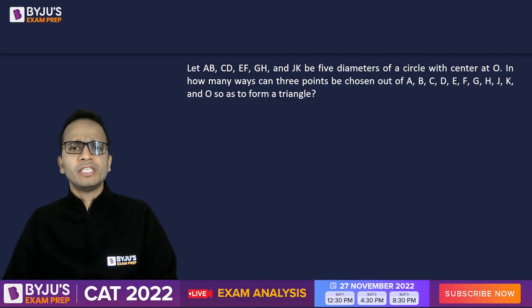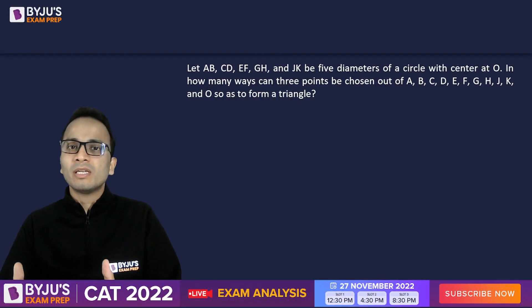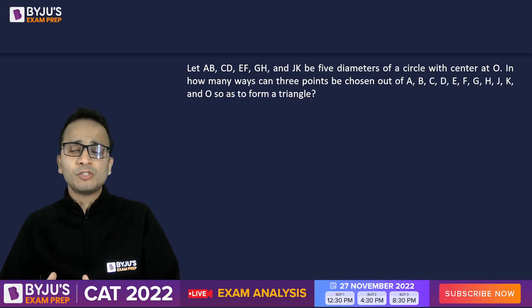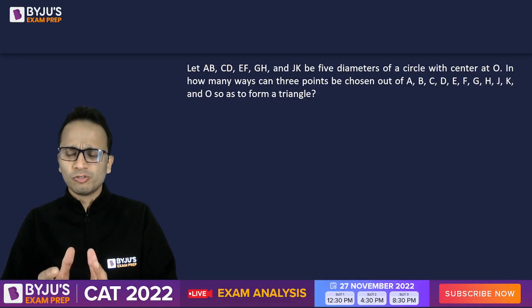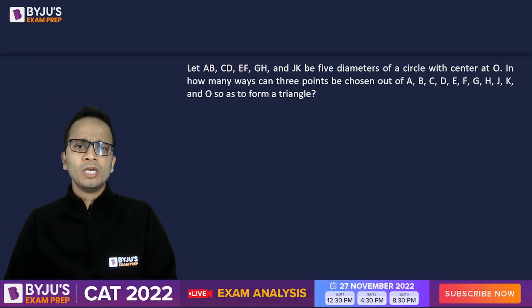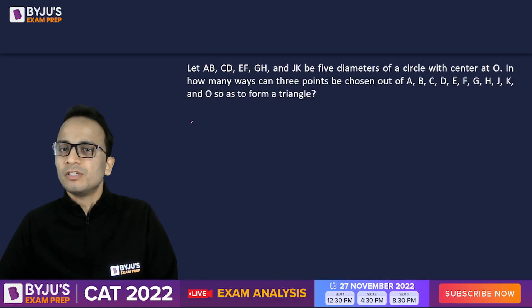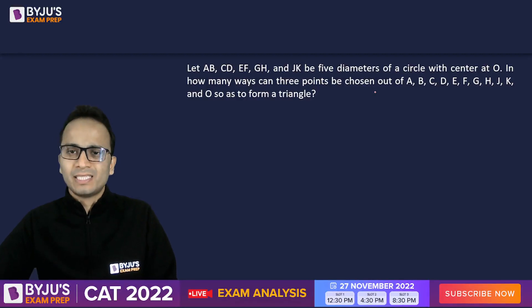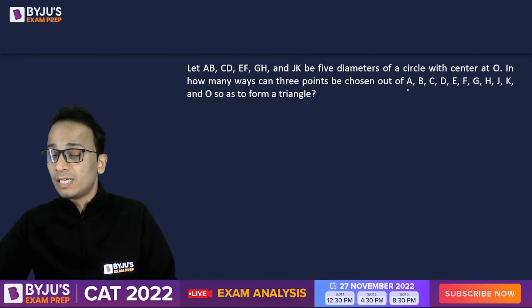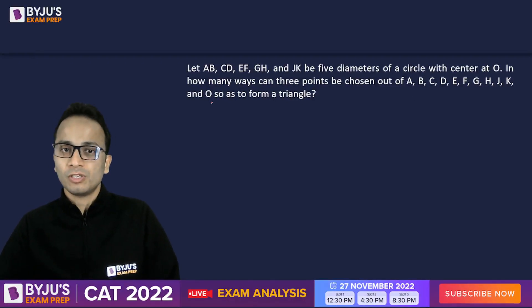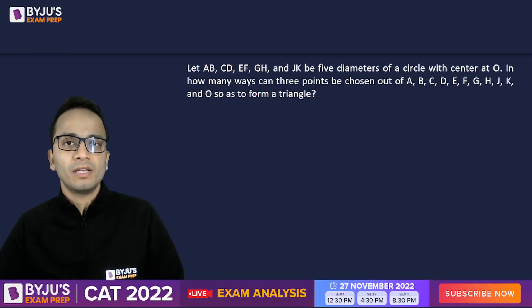The question is related to forming or counting the number of triangles that can be formed among a given number of points, where some of these points may be collinear. The question says: let AB, CD, EF, GH, and JK be five diameters of a circle with center O. In how many ways can three points be selected out of these 10 points on the circumference and one point O, the center, so as to form a triangle?